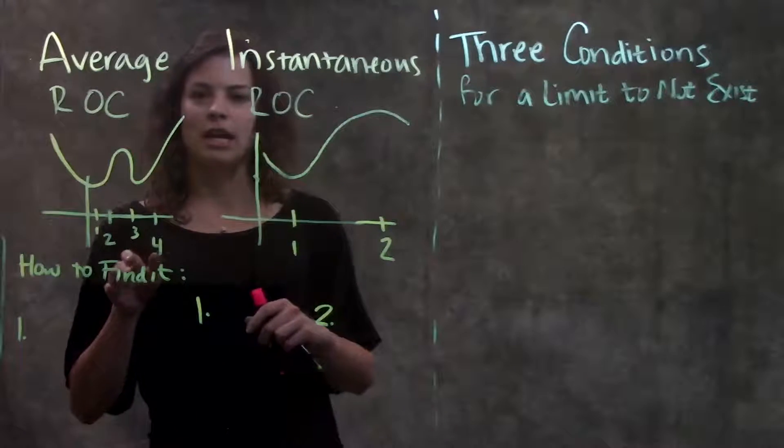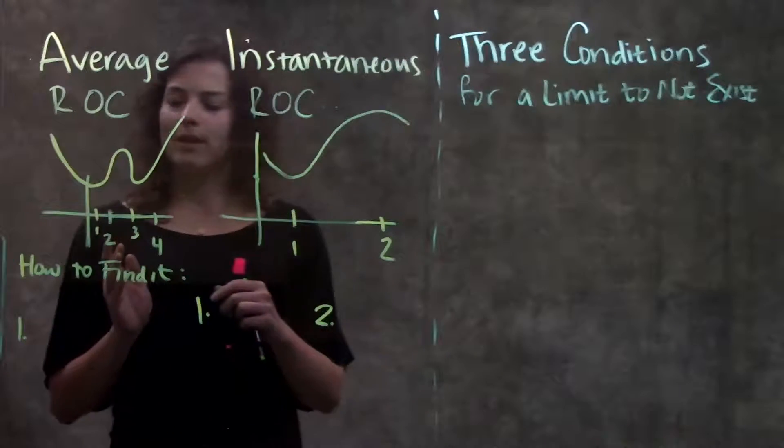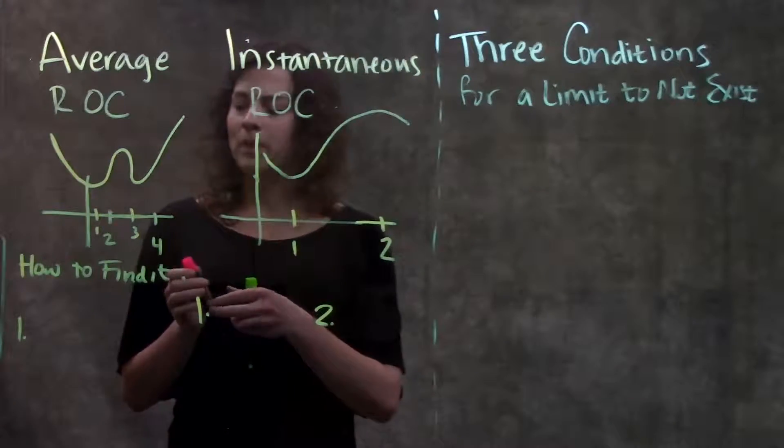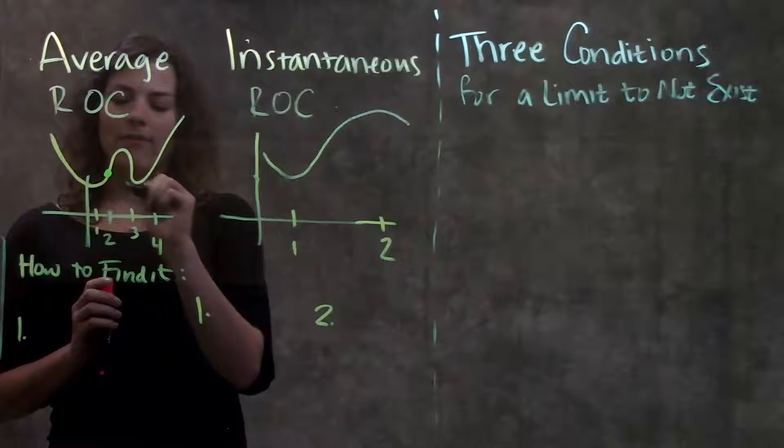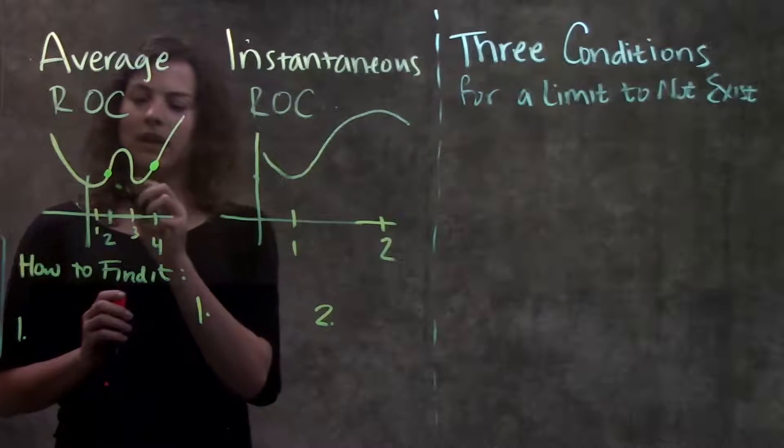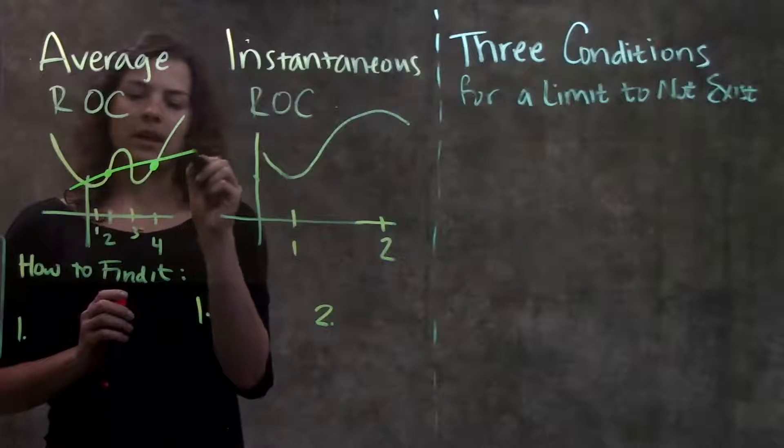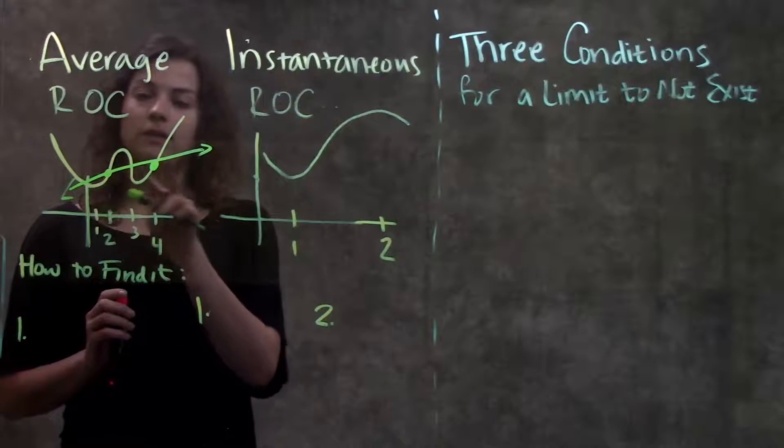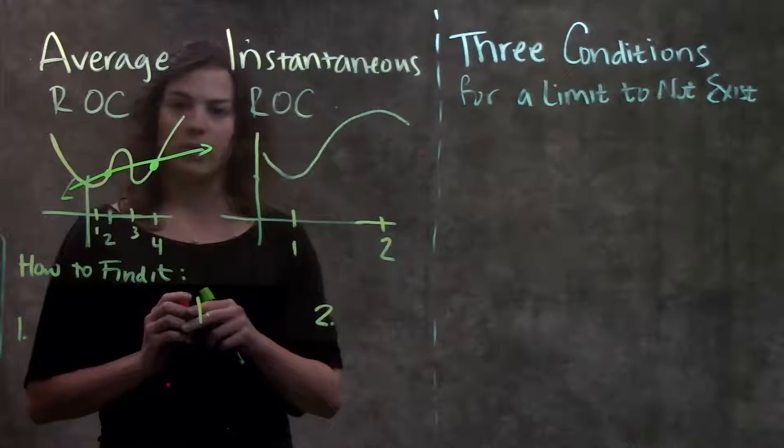For average rate of change, if you're interested in the rate of change between 2 and 4, for example, what that would look like on a graph is you have your value of 2 here, your value of 4 here. Average rate of change is just the line between them and the slope of that line between those two points.